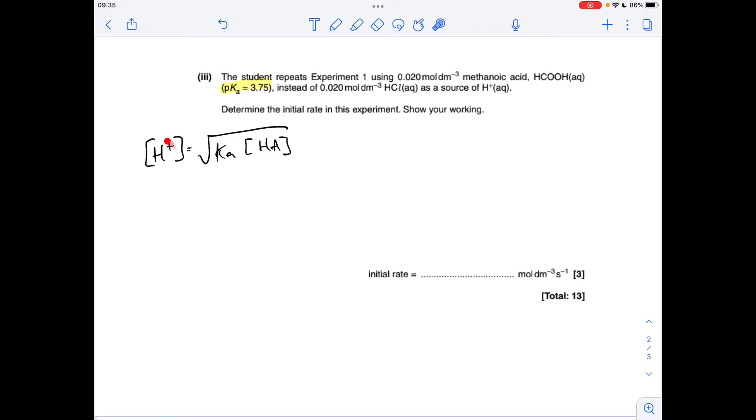So to calculate the H plus concentration of a weak acid, I call it the square root of kaha. So you can either work out the Ka value separately, 10 to the minus pKa, and then put it into the square root expression, or do what I've done is go straight in with it, 10 to the minus 3.75, multiplied by the original concentration of the weak acid, which is 0.02. So my H plus concentration is coming out at that.